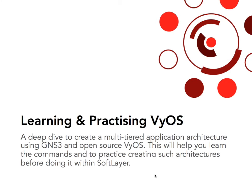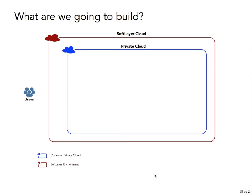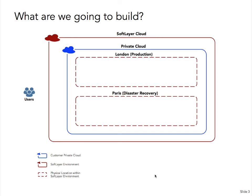This particular tutorial is going to focus on VLANing and firewalling those VLANs from each other to give a multi-tiered application architecture. Today we're going to basically set up our lab so that we will have an emulated SoftLayer cloud with a private cloud within that. Within that we're going to decide on a production capability and a disaster recovery capability, which will leverage virtual machines and a multi-tiered architecture.